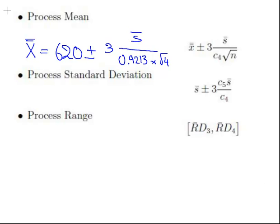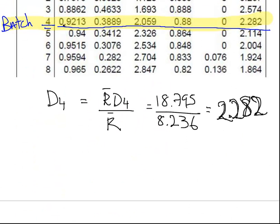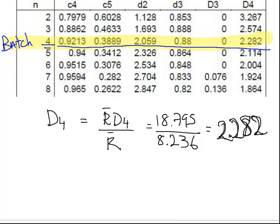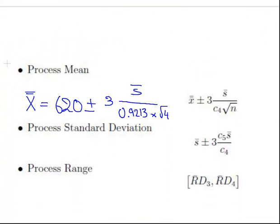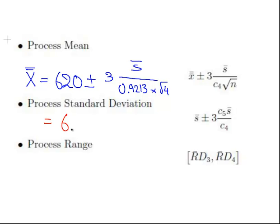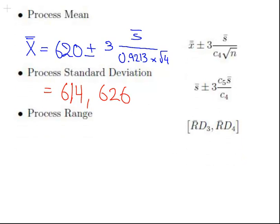Where does that 0.9213 come from? It's on the c4 column for when n is equal to 4. We've got to do a bit of calculator work. That should work out to be 614 and 626, because we know that already. That means that 6 is equal to 3 times S bar over 0.9213 times 2.